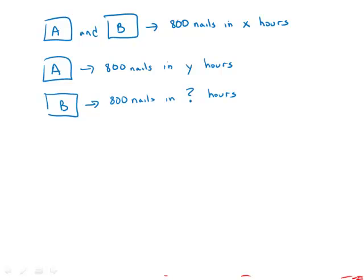So idea number one that we need for this is that when we have two machines working together, the combined rate, which I'll call the rate of A and B, equals the sum of the individual rates. So you add rates. You don't add times. You add rates. That's very important.